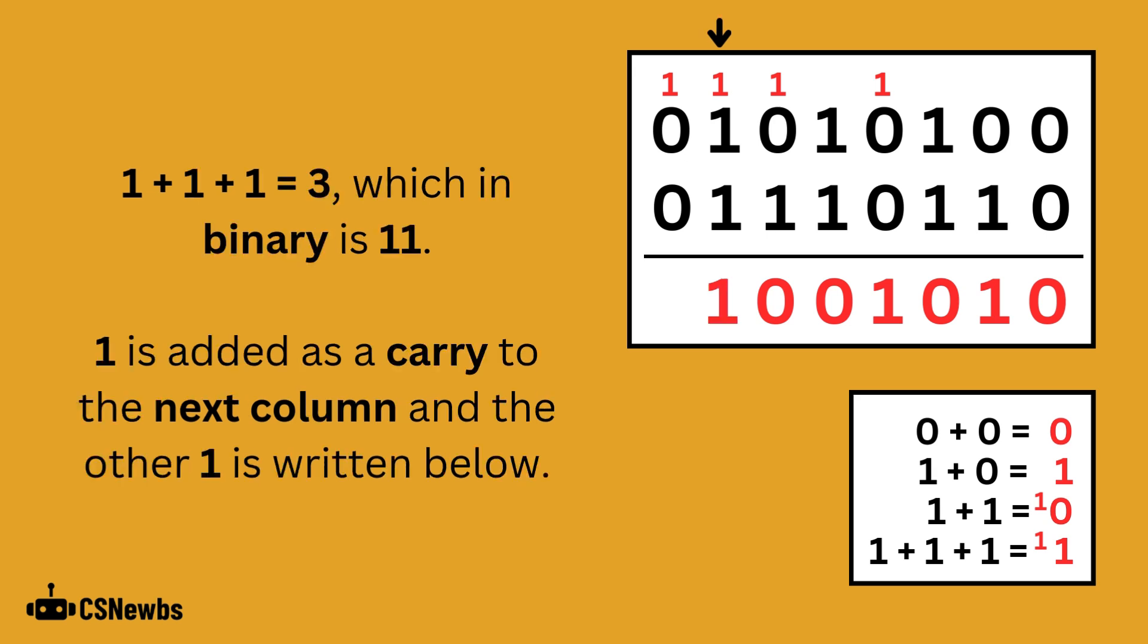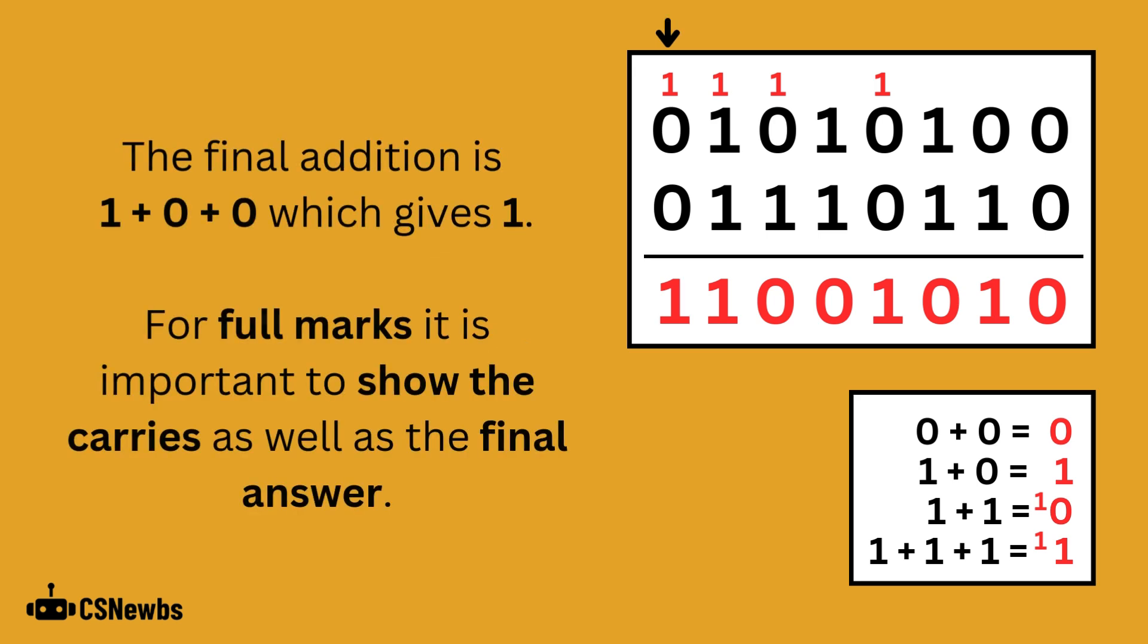1 plus 1 plus 1 is 3, which in binary is represented as 1, 1. 1 is added as a carry to the next column, and the other 1 is written below. The final column is 1 plus 0 plus 0, which gives 1.